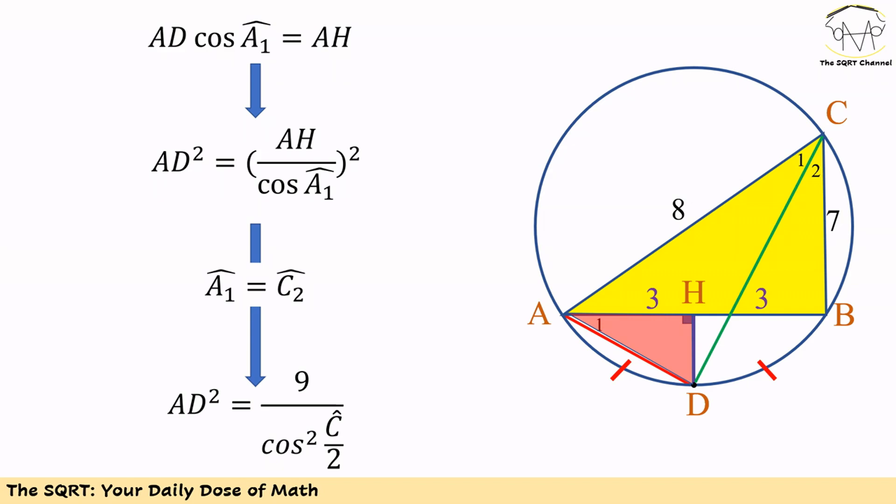Triangle AHD shown in red is a right triangle. We can write AH as AD times cosine of A1. Rearranging, we get AD squared equals (AH/cos A1) squared. Since A1 equals C1 equals C2, we can substitute.